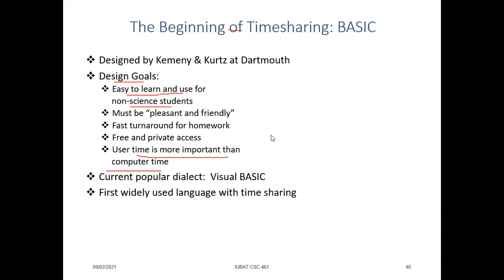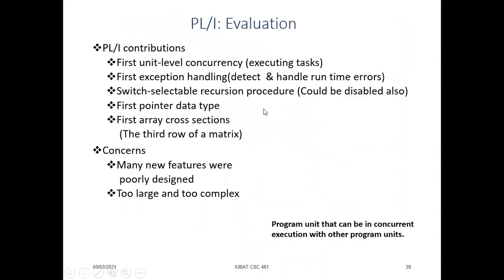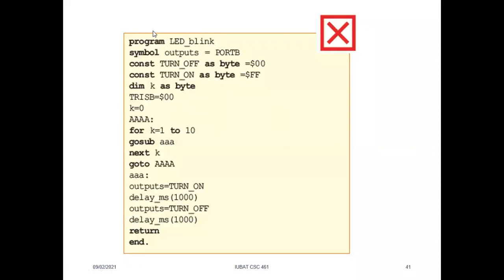For BASIC, there was a popular dialect still used today called Visual Basic. It was the first widely used programming language that used the concept of time-sharing between different programs. Tracing it back, it started with the concept of BASIC, which came from ideas in Algol and a little bit of APL. By combining the simplicity of BASIC and the features of Algol, this programming language was developed. Here is a sample program to understand what it looks like.